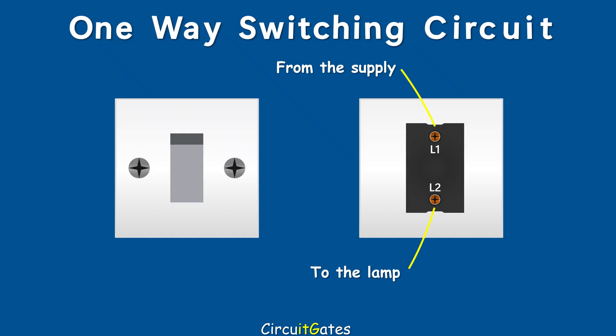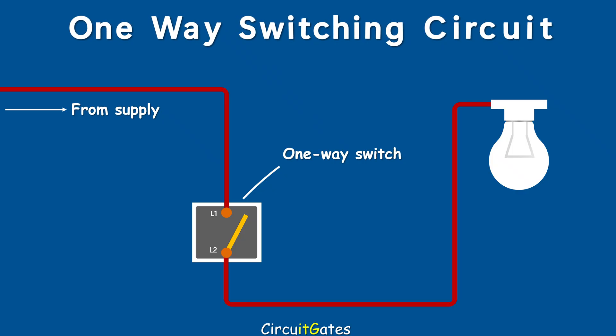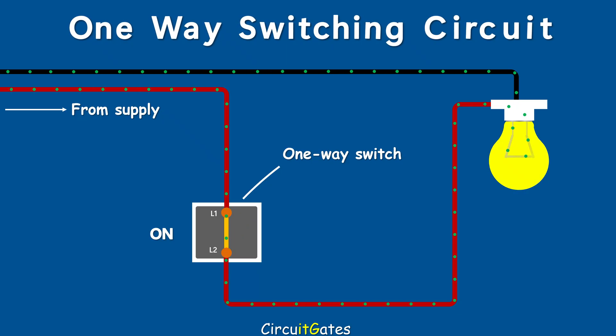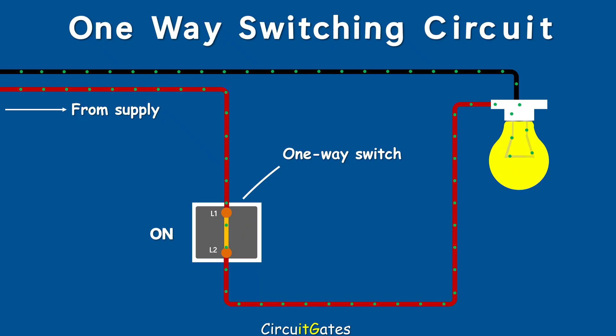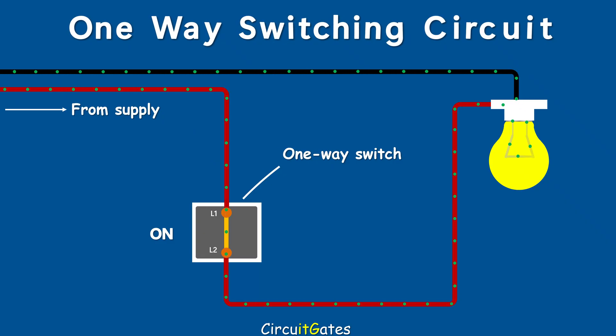In a one-way switching circuit, the live conductor from the distribution board or supply is connected to the switch. After the switch, the live conductor is connected to the lamp. The neutral wire from the supply goes directly to the lamp. In this circuit, if the switch is in the on position, the lamp illuminates. If the switch is in the off position, the lamp is not illuminated.